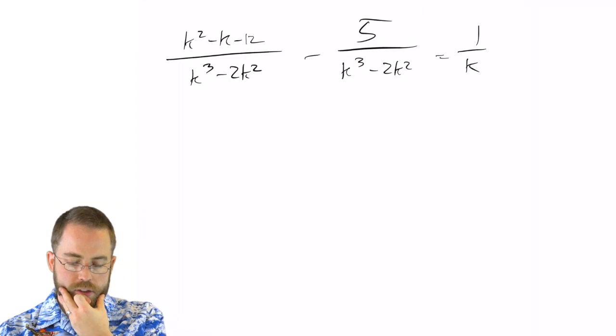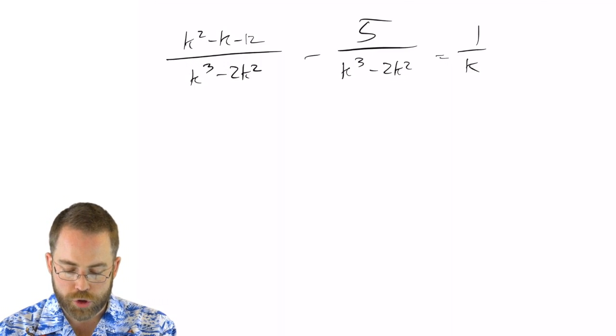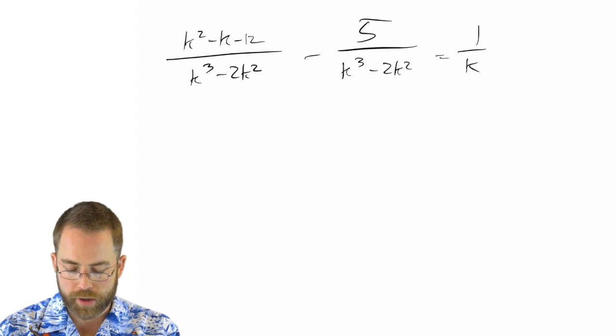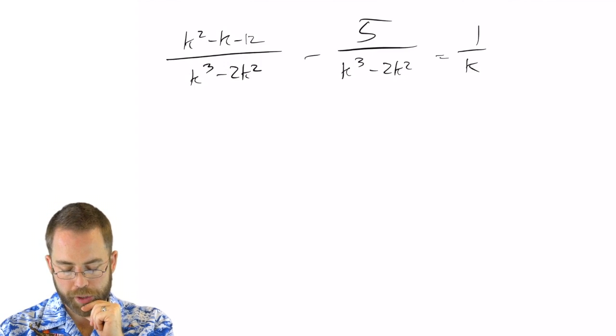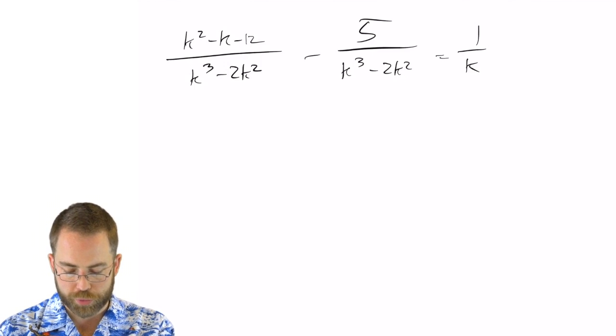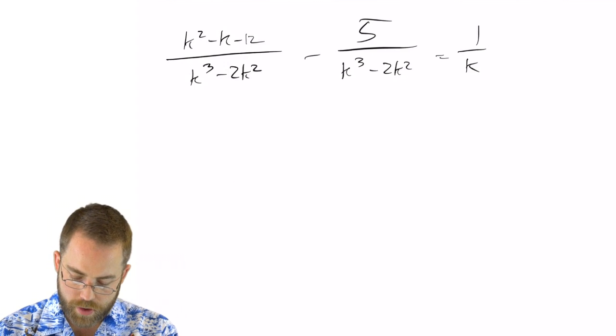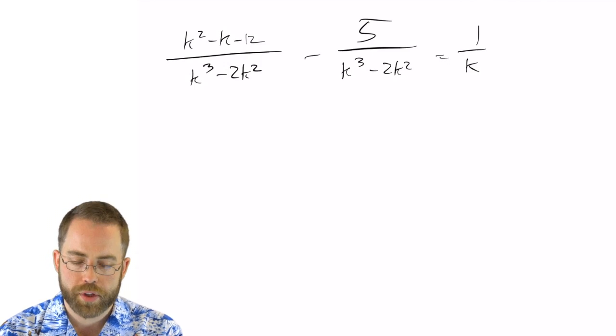Now when I look at this expression here, I see that first numerator factors into k minus 4 times k plus 3, but that won't do me any good because it's about to be subtracted, so I need it all spread out like that. But I can factor those denominators to help me see what are the common terms.